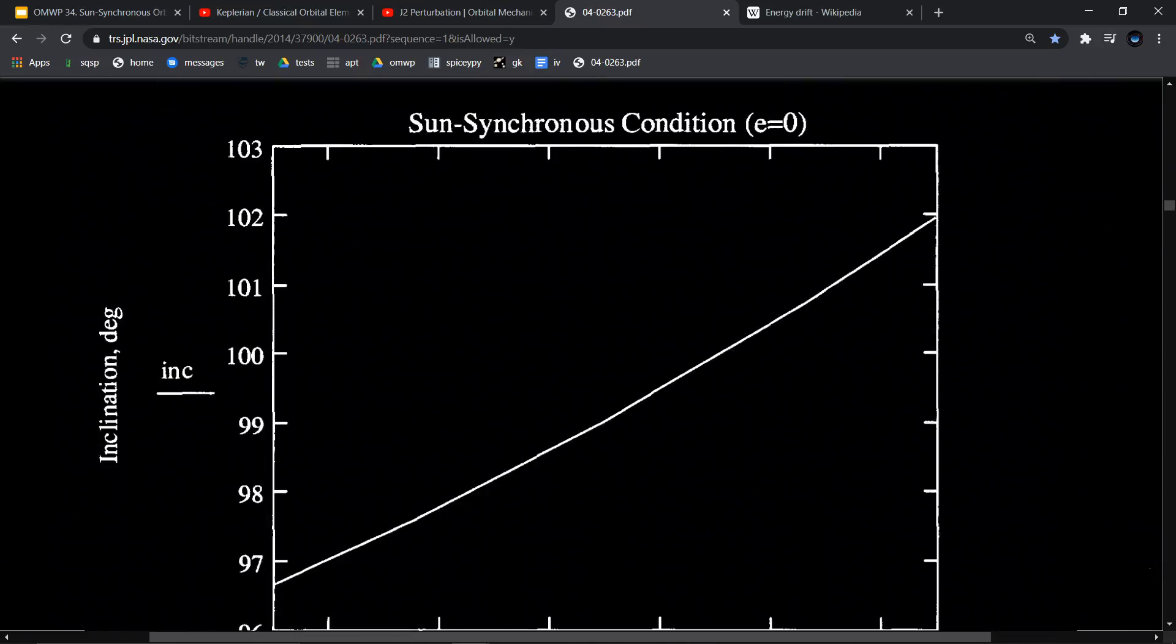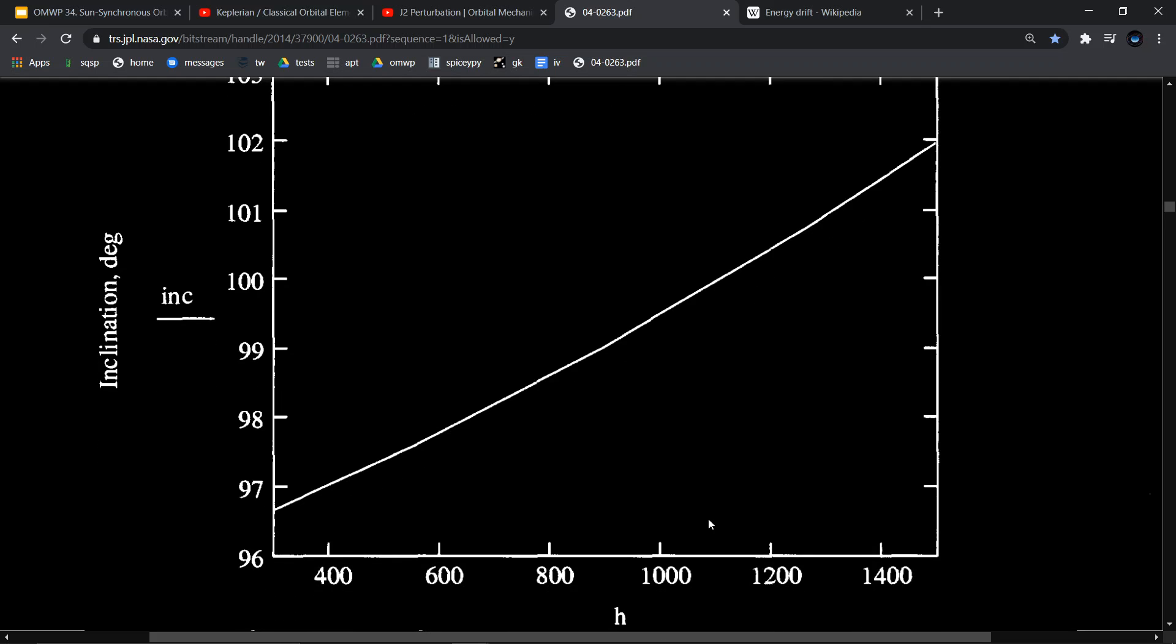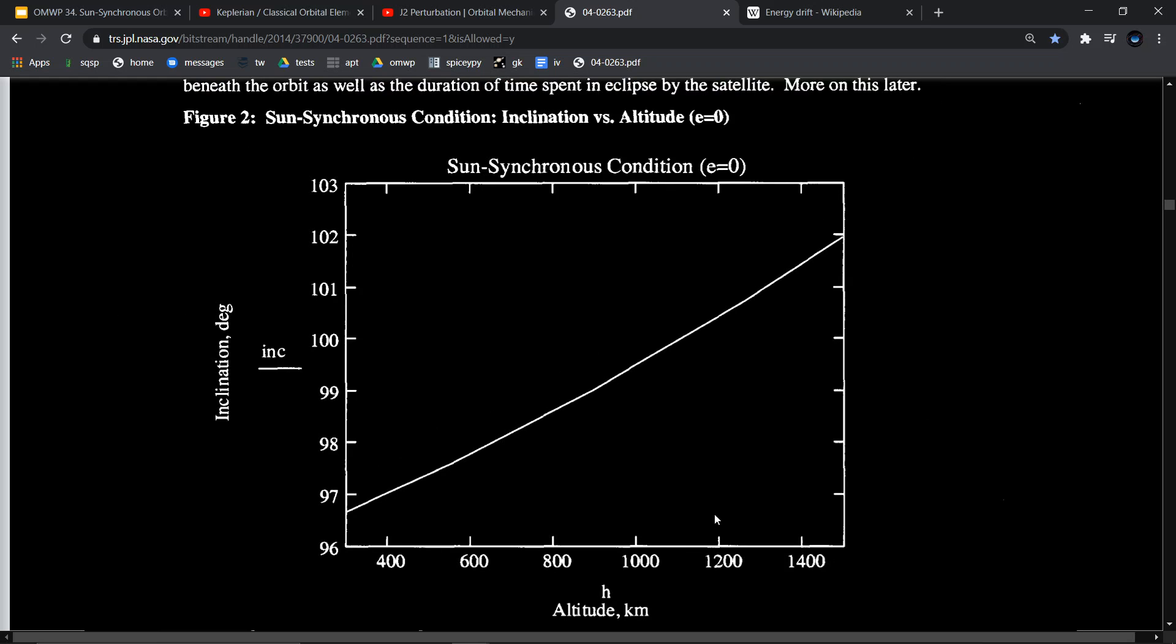We're going to be using this equation to create this function that he has here. This is the graph that we're going for. Given some altitude, which is H in this paper, and assuming an eccentricity of zero, because a lot of the times the eccentricities are close to zero when you're actually going to fly a spacecraft, you can get whatever inclination that you need in order to have a sun-synchronous orbit.